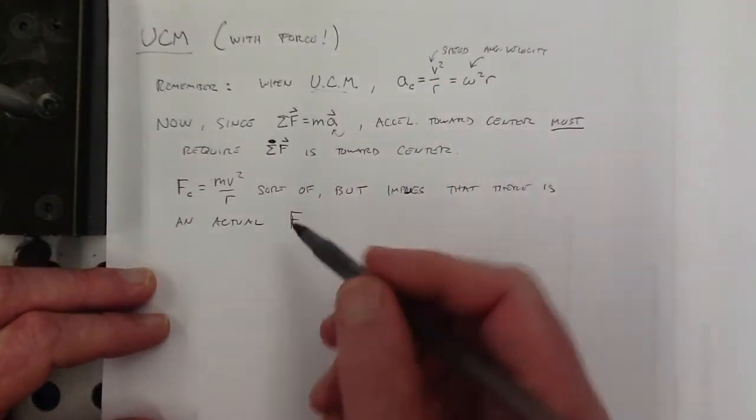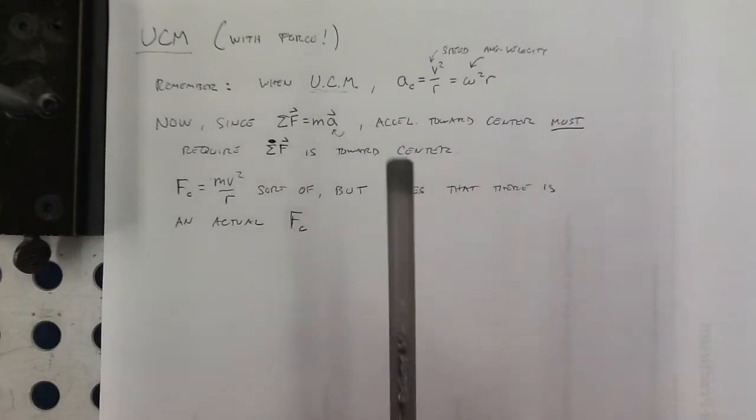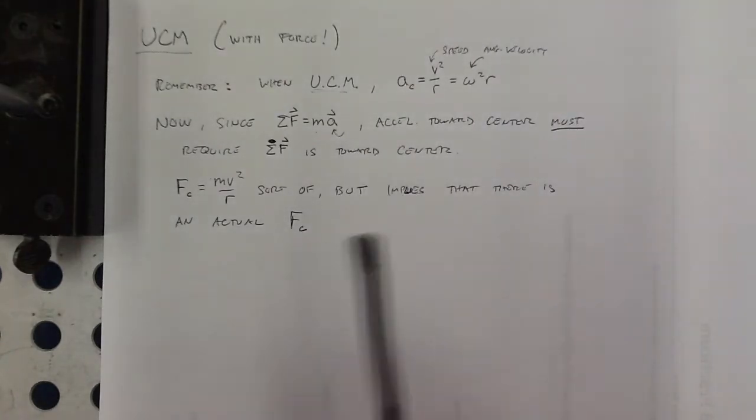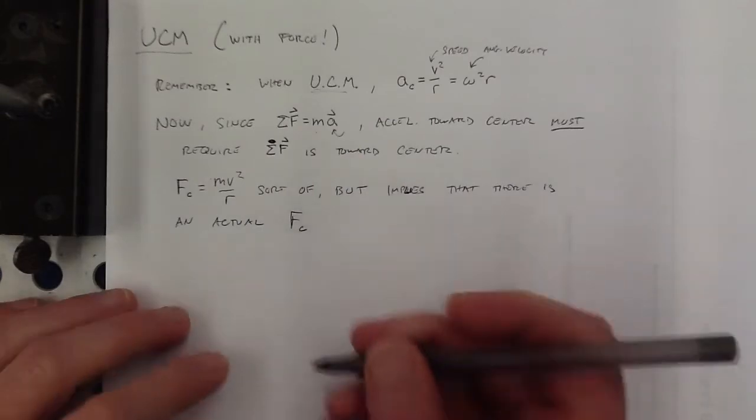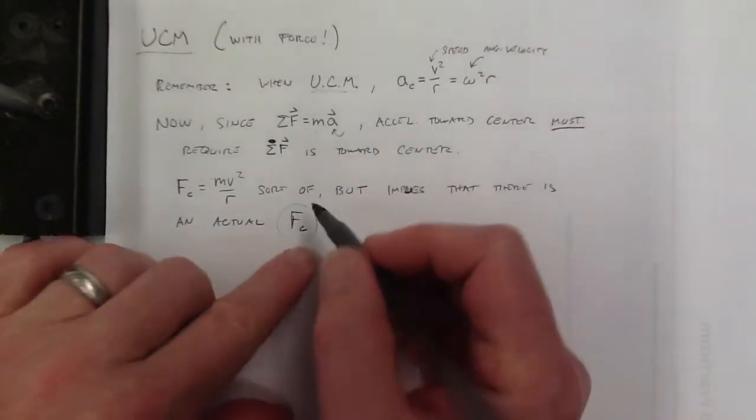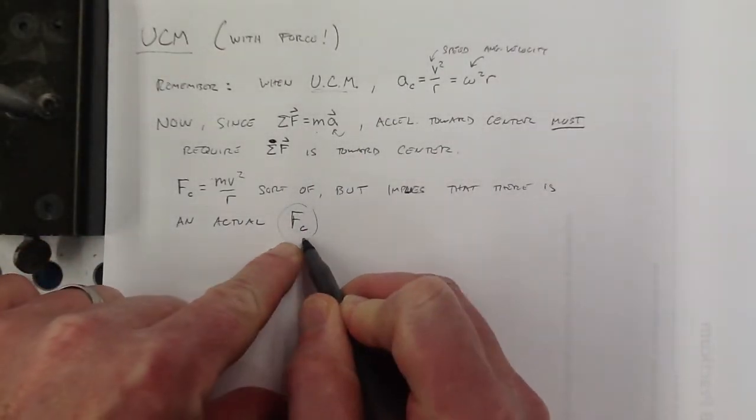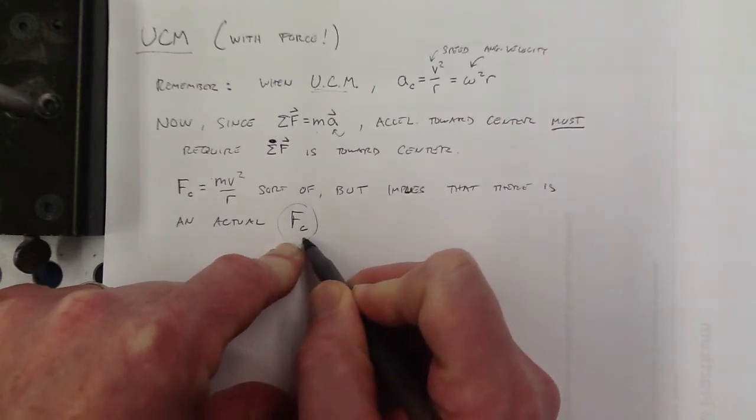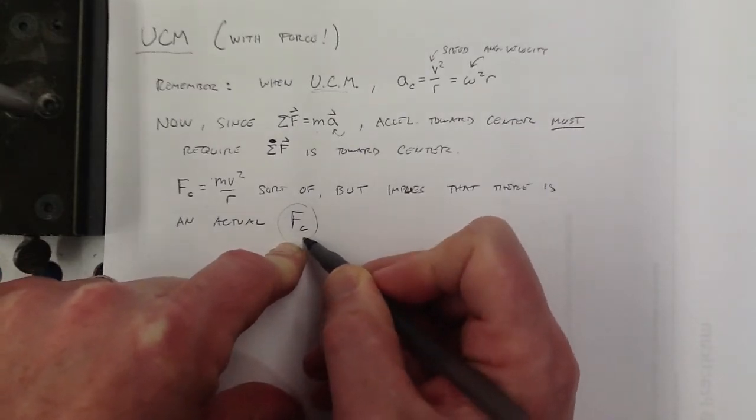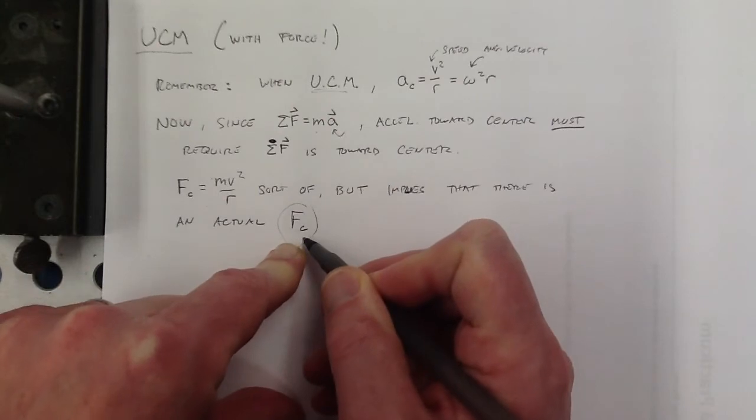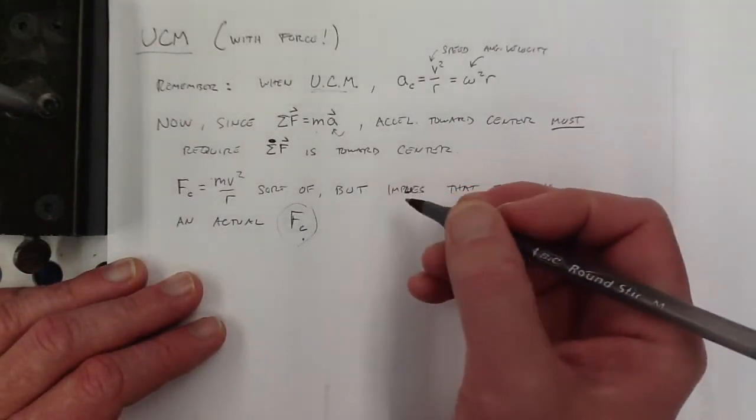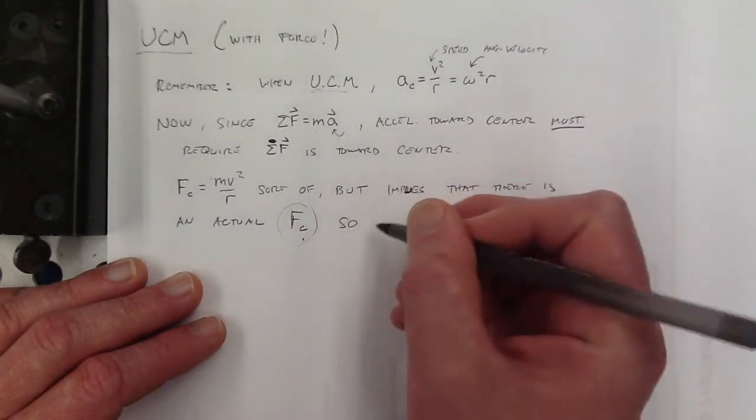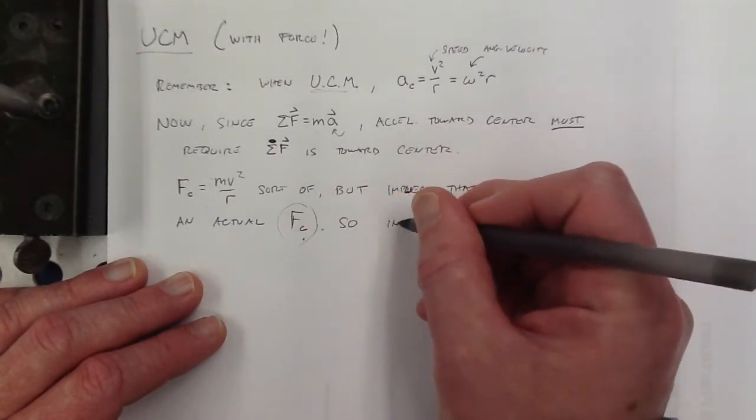But this idea implies that there is an actual centripetal force. And there isn't. I mean, there's no, like, if you look at a situation, we'll do a couple examples in just a minute. You look at an example where you have uniform circular motion. There isn't ever going to be a force that you label force centripetal in your force diagram. It's always the result of other forces that are acting on the object. So I really don't like this.